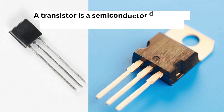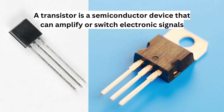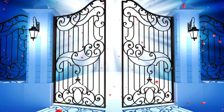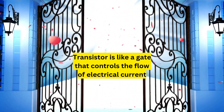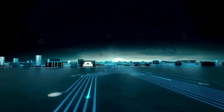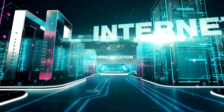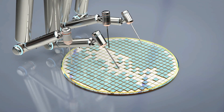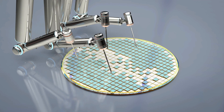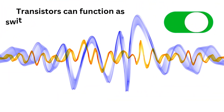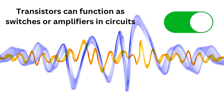A transistor is a semiconductor device that can amplify or switch electronic signals. Imagine it as a tiny gate that controls the flow of electrical current. It's a fundamental building block of modern electronics. Transistors are made from semiconductor materials like silicon, which can conduct electricity under certain conditions. This property allows them to serve as switches or amplifiers in circuits.